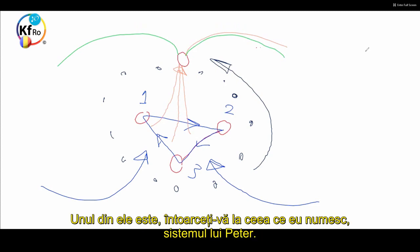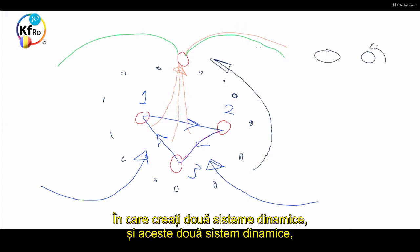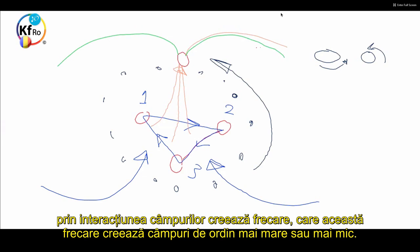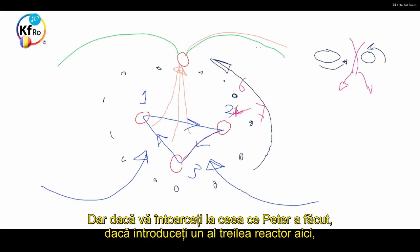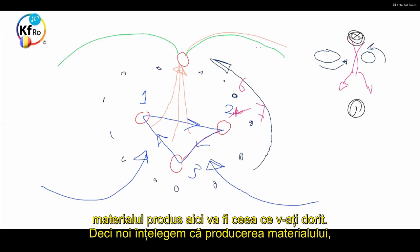One of them is what I call Peter's system, where you create two dynamic systems, and these two dynamic systems, in their interaction of their fields, create a friction which creates lower or higher order fields. So as you have, let's say, reactors six and seven, in the rotation they create fields in this area. But if you go back to what Peter did again, if you introduce a third reactor here, the material produced here could be what you've been desiring.